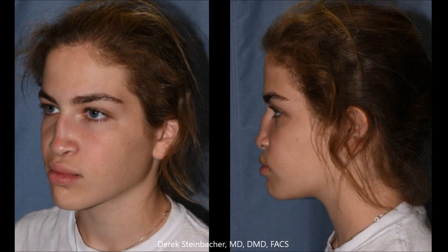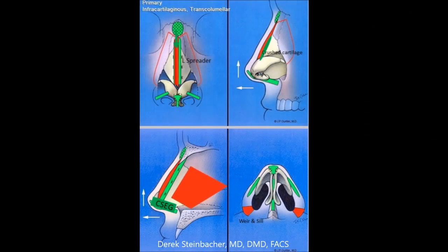Here is the rhinoplasty diagram demonstrating the procedures and techniques that we perform. This includes crust cartilage to the dorsum, component dorsal reduction, hydro to high osteotomies, cephalic trim, and alar batten grafts.